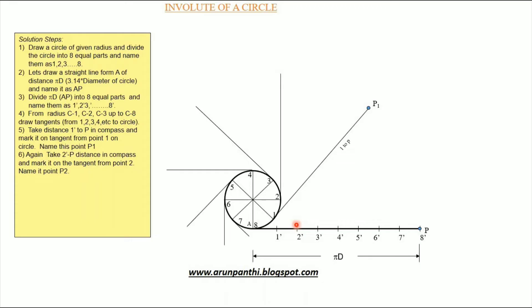Again, take two dash P distance in compass and mark it on tangent from point two. Name it P2.